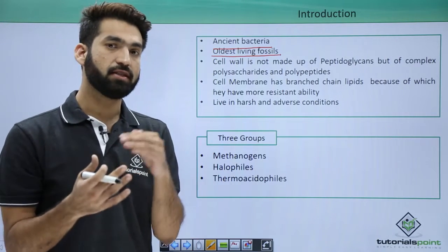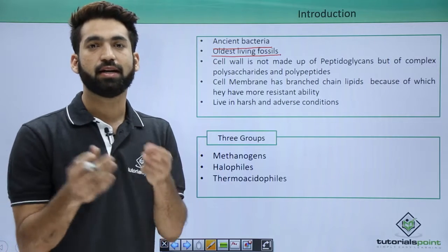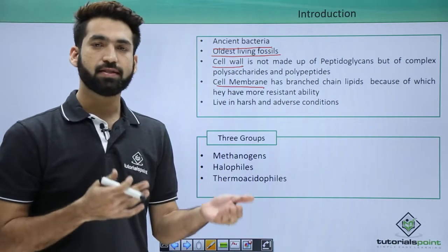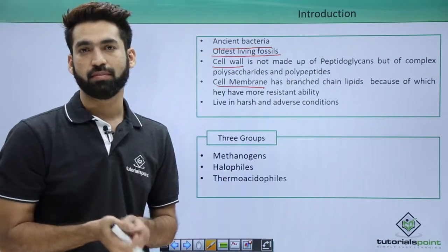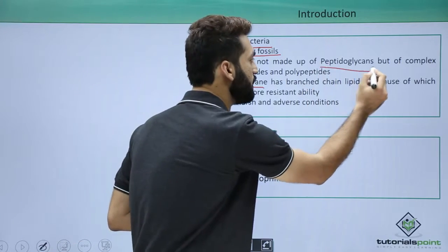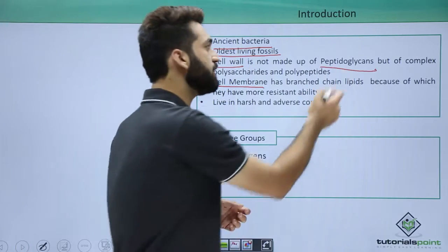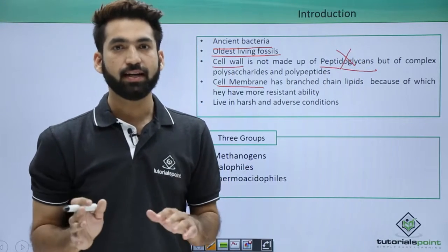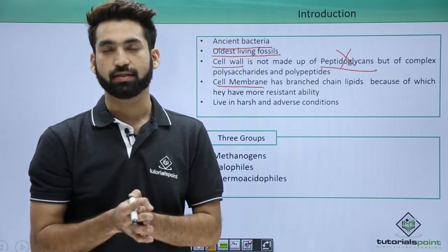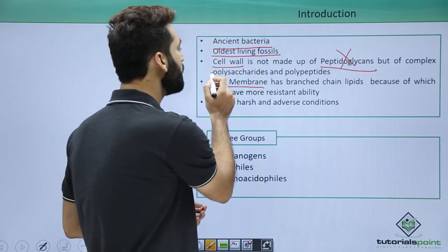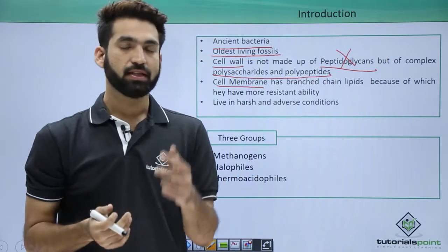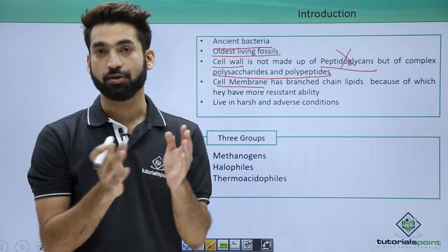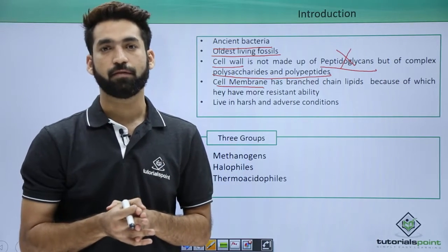When we talk about the differences between Eubacteria — true bacteria — and Archaebacteria, the major differences are in the cell wall and cell membrane. The cell wall of most Monera members or Eubacteria is made up of peptidoglycans, but peptidoglycan is not present in the cell wall of Archaebacteria. Their cell wall is instead made up of complex polysaccharides and polypeptides.